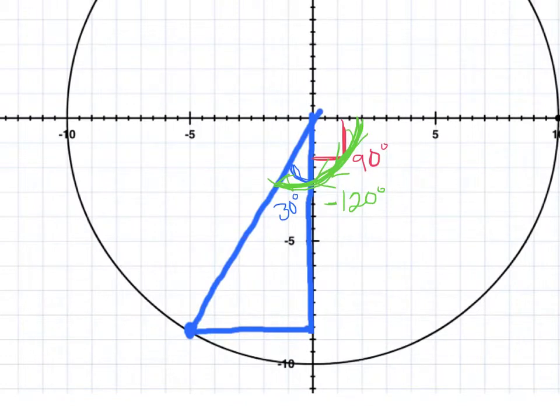All right. What kind of triangle is this? Right triangle. Right triangle. Good. Anything more specific about it? Uh, 30, 60, 90. Okay.